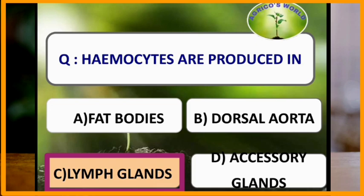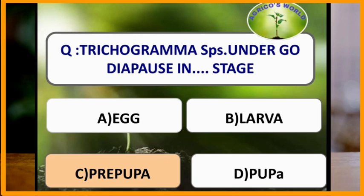Trichogramma species undergo diapause in the pre-pupal stage.